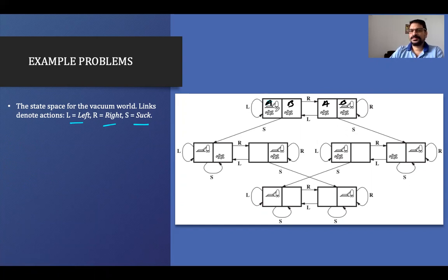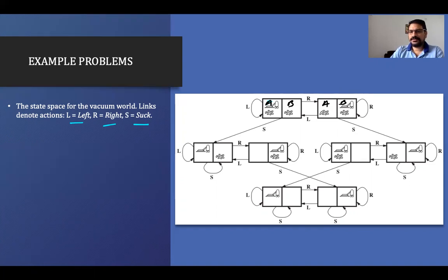From room A, if we take the action right, the vacuum cleaner will be in that particular state. If we are in the initial state in room B and take right, we stay in room B. But if we take left from room B, we go to room A. So all the actions have been performed and all the states have been explored.